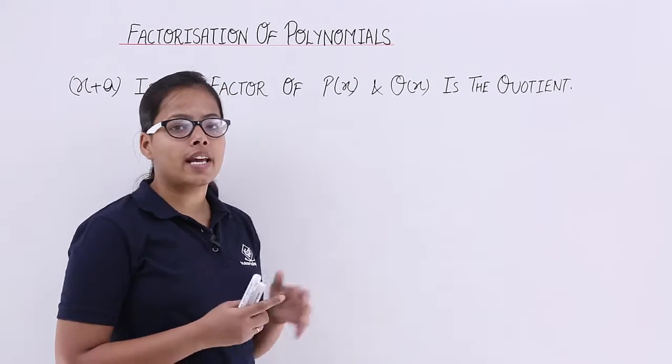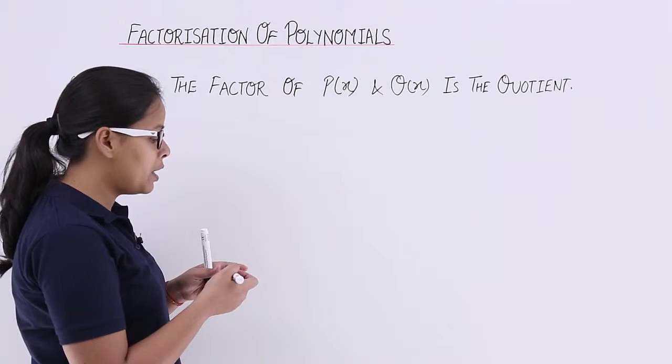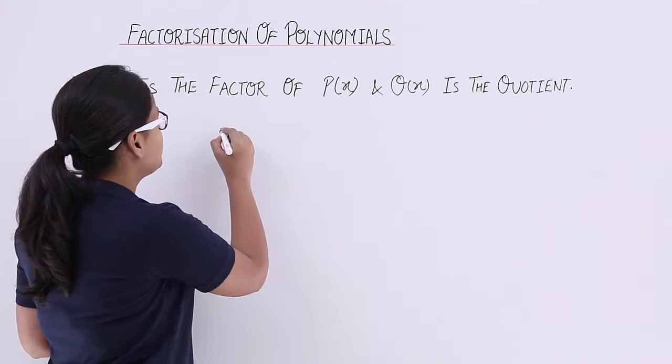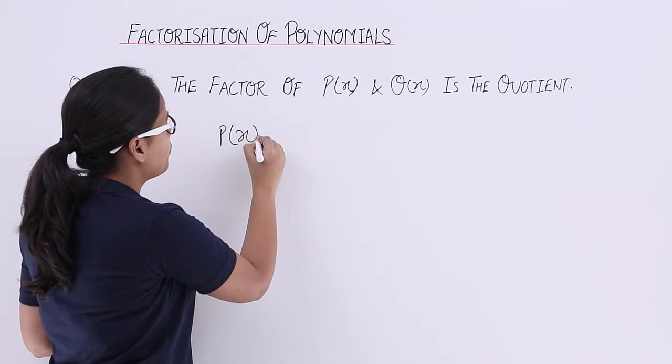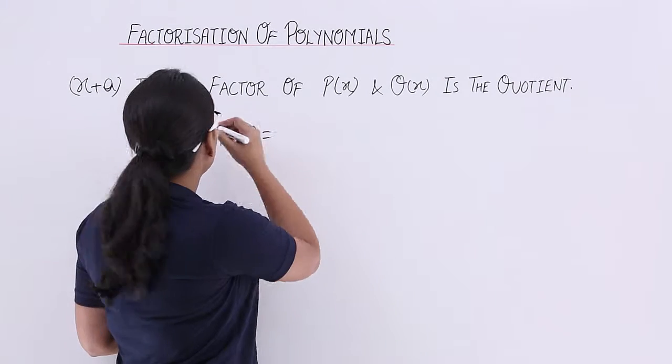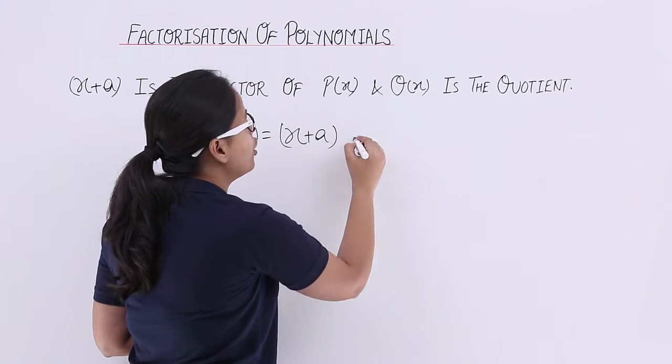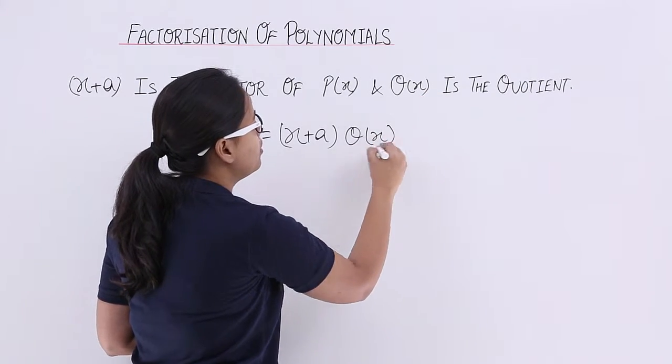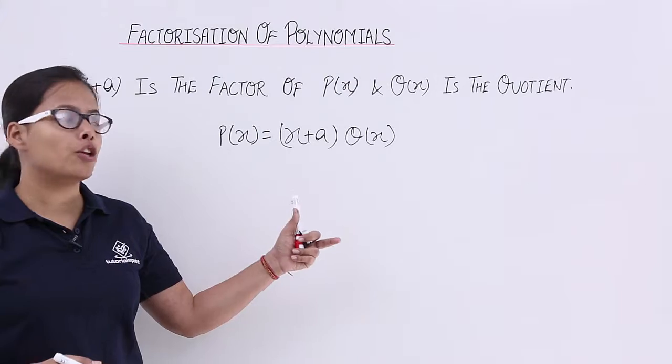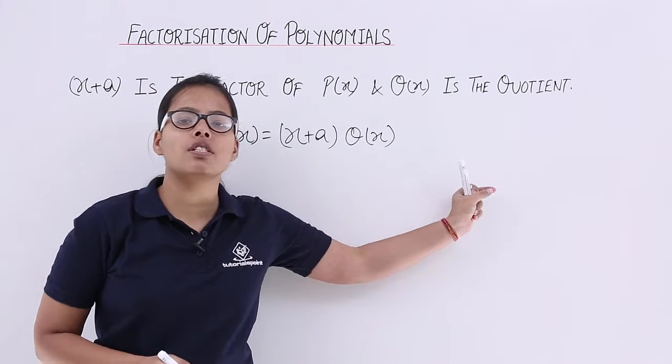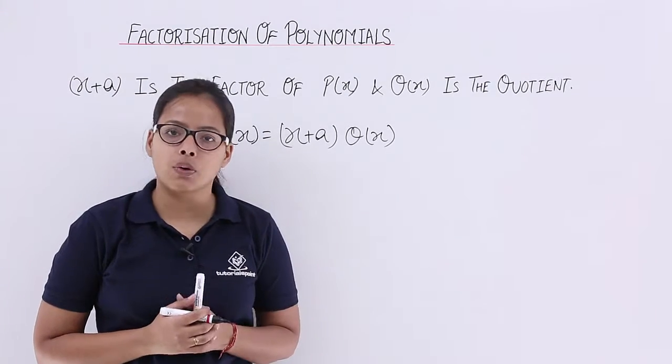In this case, you can represent P(x) as the factor of this polynomial and this is the quotient of this polynomial. So you can represent this polynomial this way because remainder here is zero.